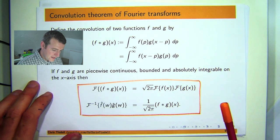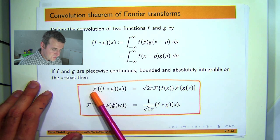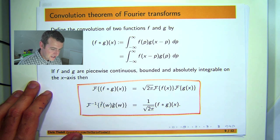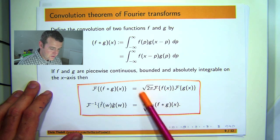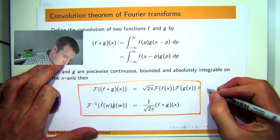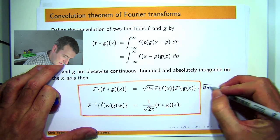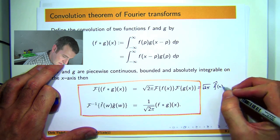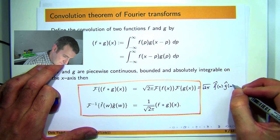Essentially it's the following. If you want to take the transform of f star g, then it's this constant times the product of the two transforms.